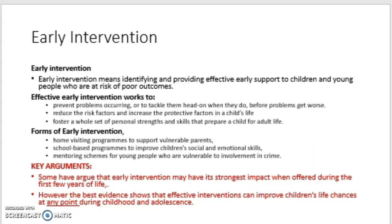Their main focus is to improve outcomes for children. For example, services may help parents who are living in challenging circumstances provide a safe and loving environment for their child. Or if a child is displaying risk-taking behaviour, early intervention approaches might work with the children and their parents to find out the reasons for the behaviour and put strategies in place to help keep them safe. Effective early intervention works to prevent problems occurring or tackle them head on before problems get worse, and can reduce risk factors and increase protective factors in a child's life.